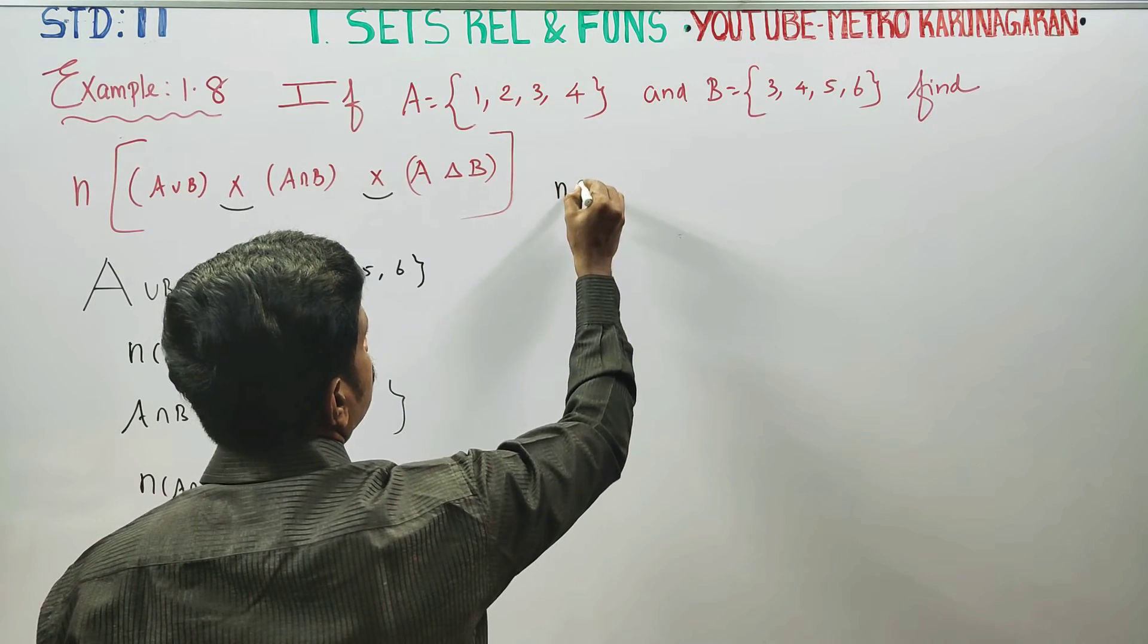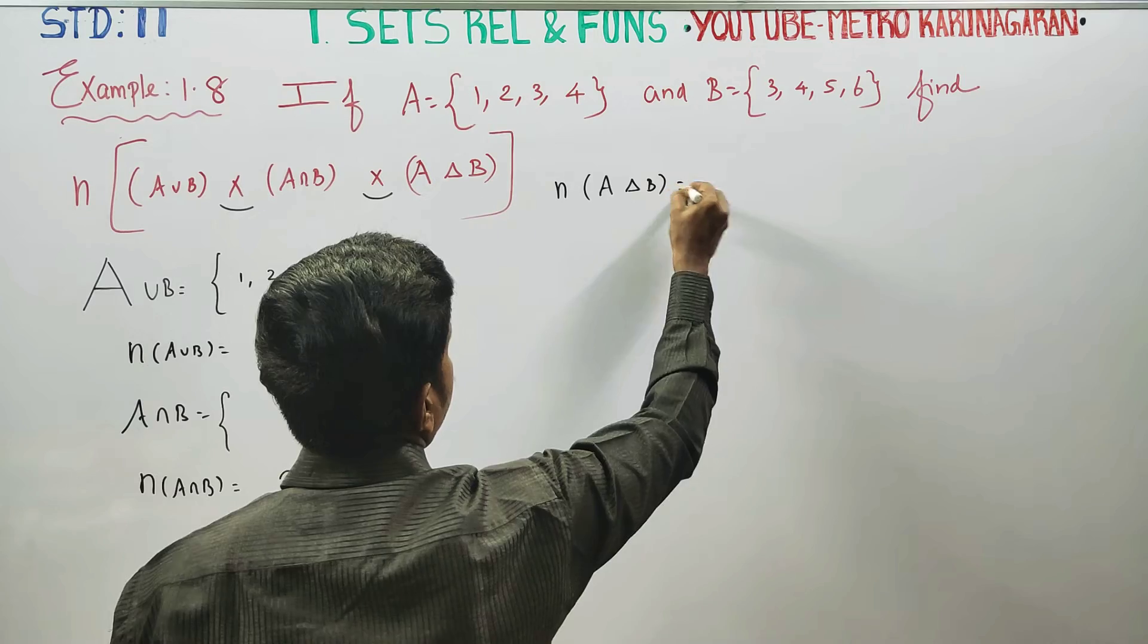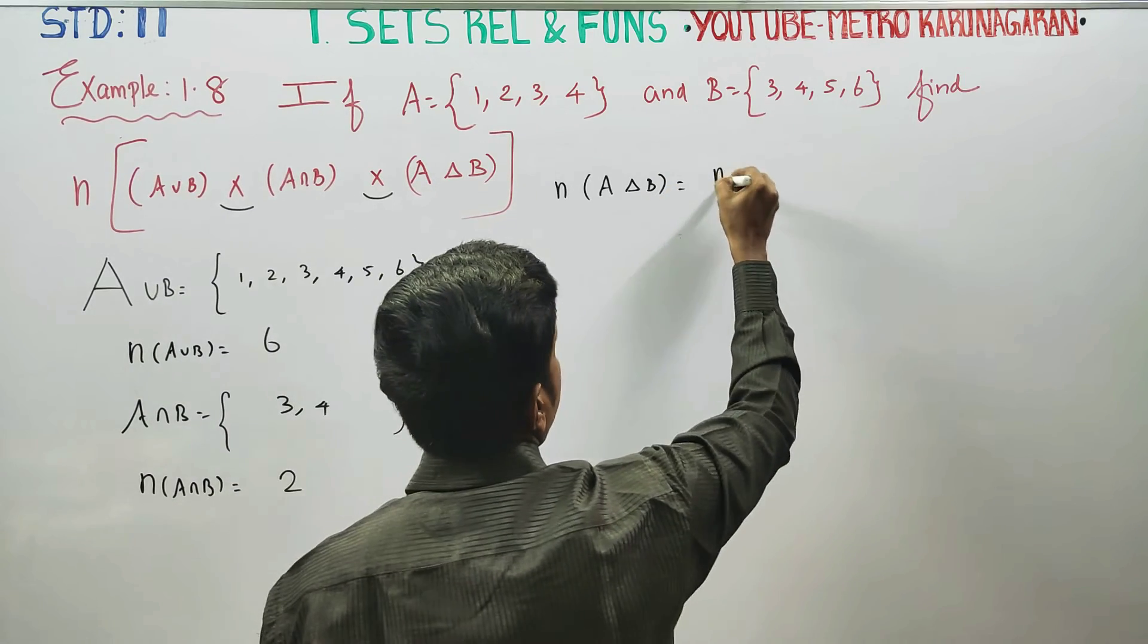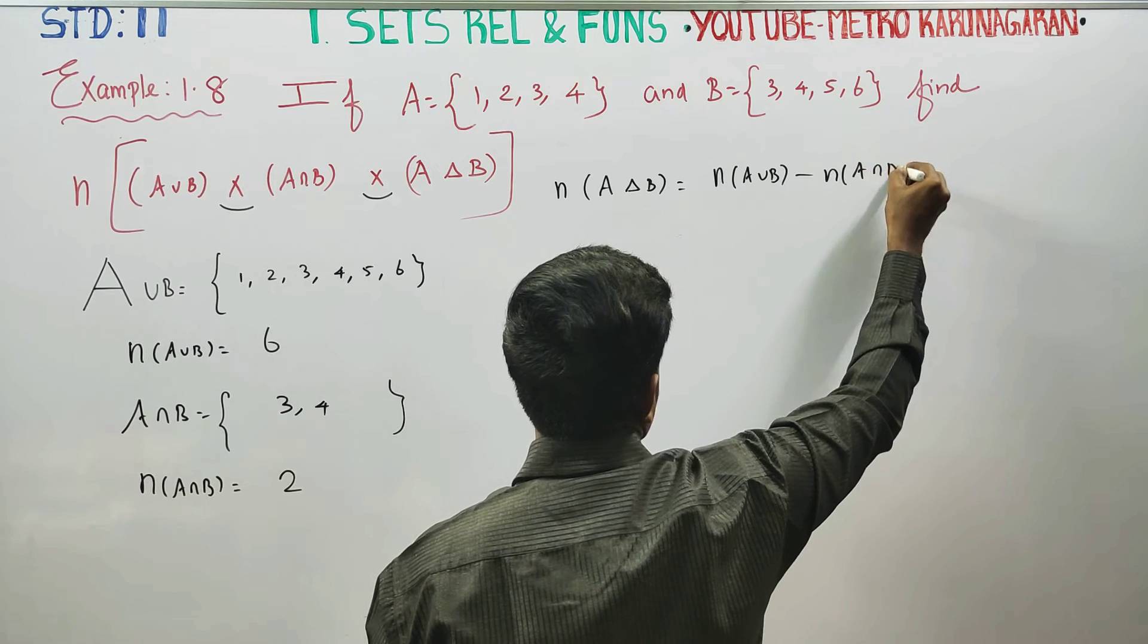N of A delta B is equal to N of A union B minus N of A intersection B.